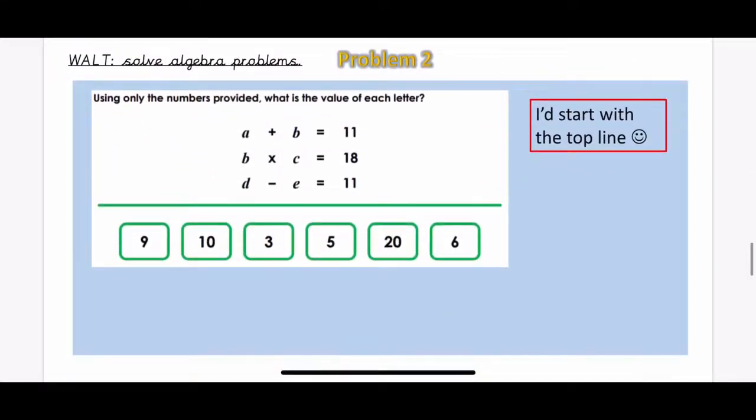Okay, so for problem 2, there are 6 digit cards and they are going to match up with different letters. So we've got A plus B equals 11, B multiplied by C equals 18, and D subtract E equals 11. I would start with the top line to think about which two numbers from those digit cards add together to make 11, and then see which cards you can use for the other two calculations after that.